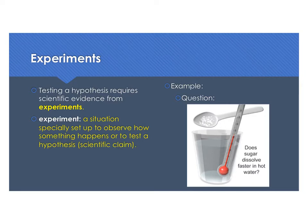We talked about claims in science, which we call hypotheses, and those claims need to be tested. That's how we acquire evidence to support our claims. Testing a hypothesis requires scientific evidence, which normally in chemistry comes from experiments. An experiment is a situation set up to observe how something happens or to test a hypothesis, a scientific claim. If you've used the word claim in other classes, just remember a hypothesis is a claim in science.